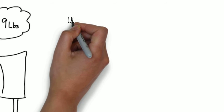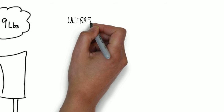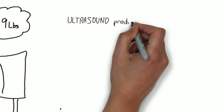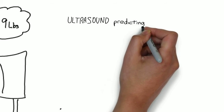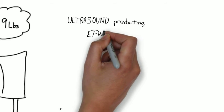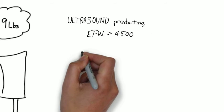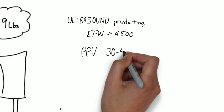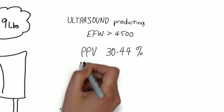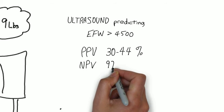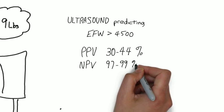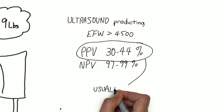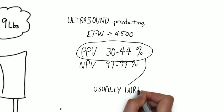To recap the accuracy of ultrasound in predicting a birth weight of greater than 4,500 grams, the positive predictive value is 30 to 44 percent, and the negative predictive value is 97 to 99 percent. Remember, these statistics are affected by the prevalence of the condition, and only 1 percent are greater than 4,500 grams. Therefore, if an ultrasound says a fetus is over 4,500 grams, only 30 to 44 percent of the time will that be correct. Another way of saying that is, it's usually wrong.